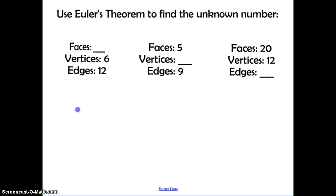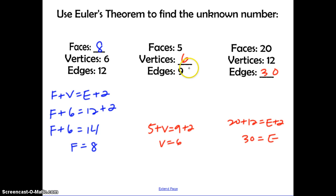So here we want to use Euler's Theorem to find the unknown number. So we're going to take faces plus vertices equals edges plus 2, and then substitute the information we know. And then we get F plus 6 equals 14, and F is equal to 8. So go ahead and pause, find the number of vertices and edges in these two problems, and then check back with me to see if you got it right. Hopefully you found the middle one, the vertices, equal to 6, and the last one, edges, equal to 30.